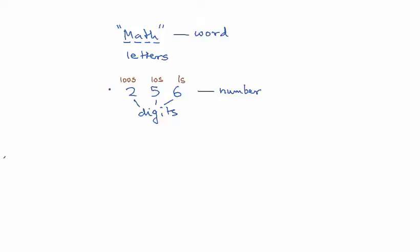Imagine if you had a couple more digits before the two. Let's say a 7 and a 4. The 7 is in the thousands place and the 4 is in the tens thousands place.